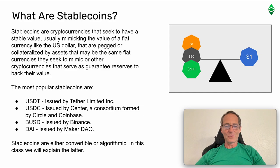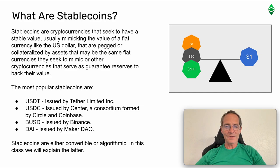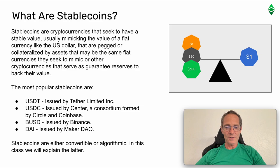What are Stablecoins? Stablecoins are cryptocurrencies that seek to have a stable value, usually mimicking the value of a fiat currency like the US dollar, that are pegged or collateralized by assets that may be the same fiat currencies they seek to mimic, or other cryptocurrencies that serve as guarantee reserves to back their value. The most popular stablecoins are USDT issued by Tether Limited Inc., USDC issued by Center — a consortium formed by Circle and Coinbase — and BUSD issued by Binance.